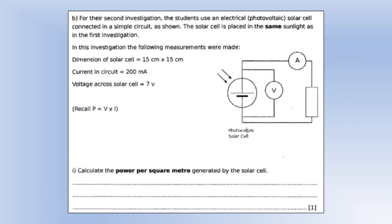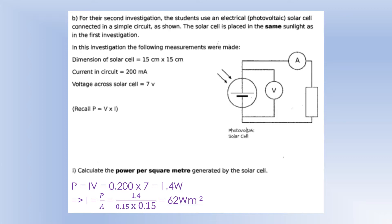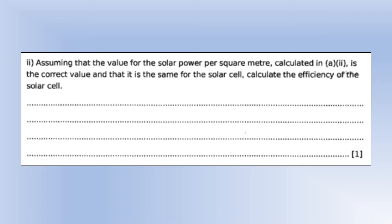For a second investigation, the student is using a photovoltaic solar cell connected in simple circuit as shown. The solar cell is in the same sunlight as in the first investigation. The following measurements are made. We've got the dimensions 15 by 15, so basically it's a square. The current is 200 milliamps, the voltage is 7 volts. Calculate the power per square meter generated. To get power, we're going to use p equals iv, and then once we've got power, we can divide that by the area to give us the intensity of 62 watts per meter squared. Using that value, calculate the efficiency. We know the actual intensity is 334 watts per meter squared, but we didn't get that from our calculation. So, if we get the value we calculated divided by the expected value, we can see we've got an efficiency of 0.19, which actually for a solar cell is not too bad.